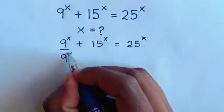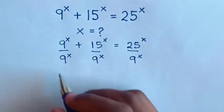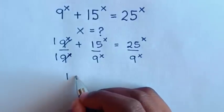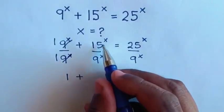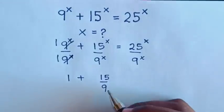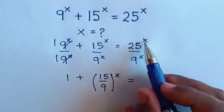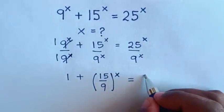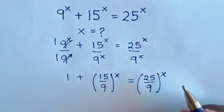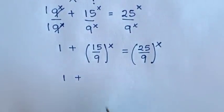We divide by 9 power x on both sides. To simplify this, we cancel to get 1. So our equation will be 1 plus — power x is common — so it will be 15 over 9, bracket power x, is equal to — power x is common — so it will be 25 over 9 bracket power x.